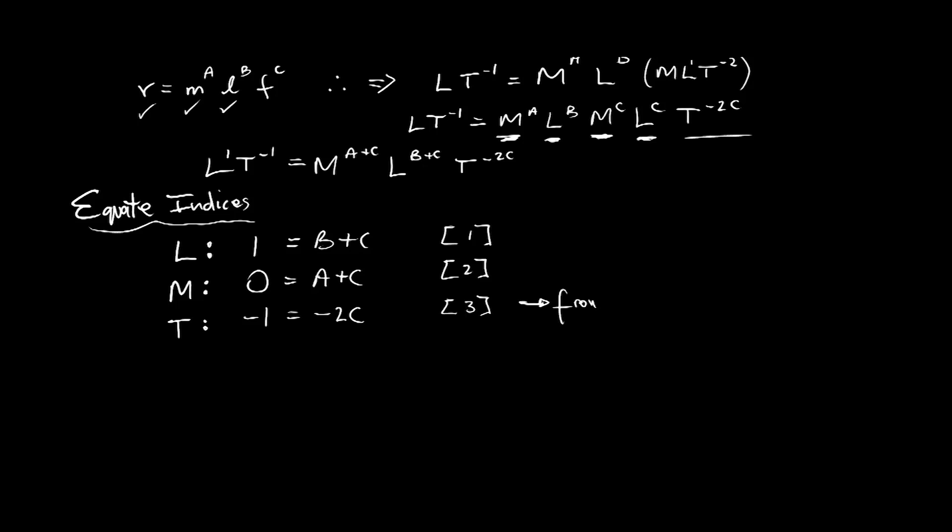And we can say it was fairly obvious from expression three. So we can say from three, we have minus one equals minus two C. So you divide both sides by minus two. You get C on its own. You have minus one over minus two equals C. Therefore, obviously C must be equal to, minus over minus, they cancel, becomes plus half. Half is 0.5.